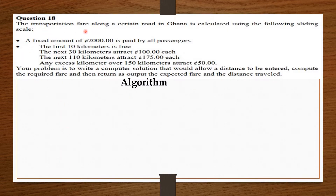The transportation fare along a certain road in Ghana is calculated using the following sliding scale: a fixed amount of 2000 cedis is paid by all passengers. The first 10 kilometers is free. The next 30 kilometers attract 100 cedis each. The next 110 kilometers attract 175 cedis each. Any excess kilometer over 150 kilometers attracts 50 cedis. Your problem is to write a computer solution that will allow a distance to be entered, compute the required fare, and return as output the expected fare and the distance traveled.